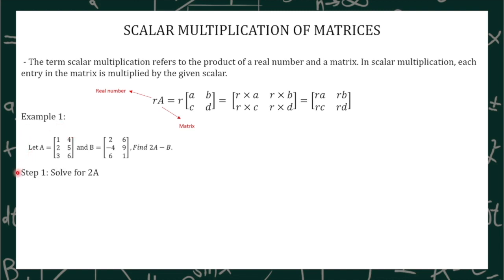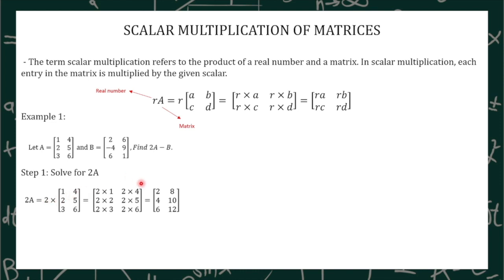For step 1, we need to solve for 2A. We have to multiply our real number — in this case 2 — to the matrix itself. So 2 times 1 will become 2, 2 times 4 will become 8, 2 times 2 will become 4, 2 times 5 will become 10, 2 times 3 will become 6, and 2 times 6 will become 12.